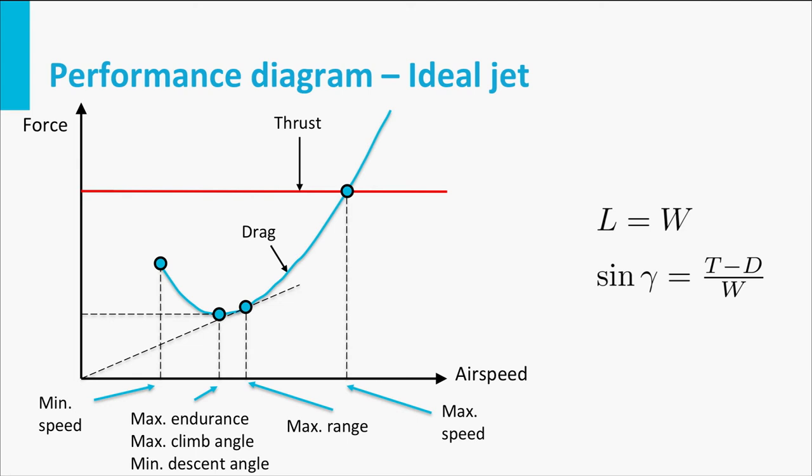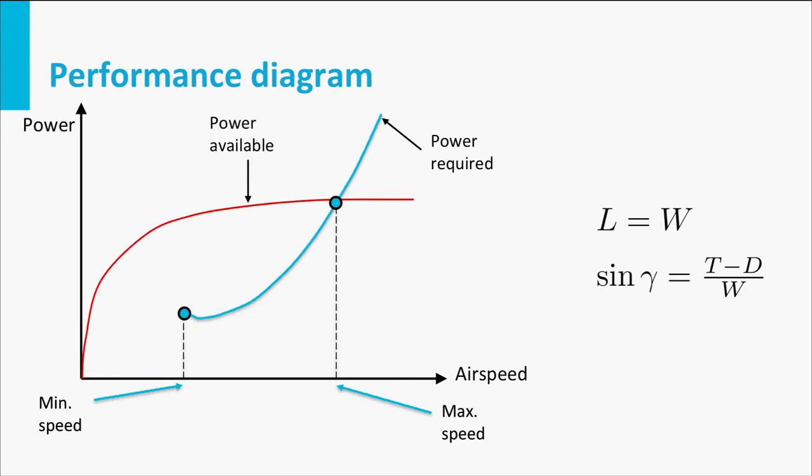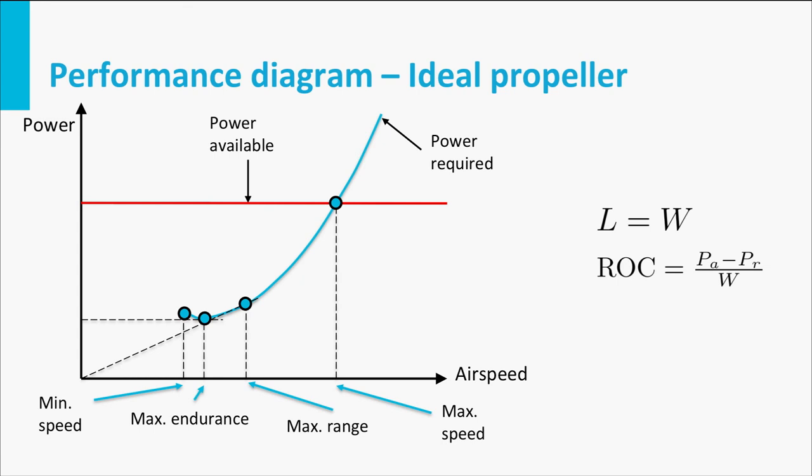We can also make a performance diagram with power on the y-axis instead of a force. If we assume to have an idealized propeller aircraft with maximum power available independent of airspeed, we can derive in this diagram that the condition for maximum rate of climb occurs at the airspeed for minimum power required. At the same time, this point is ideal to obtain minimum rate of descent angle in case there is no engine power.